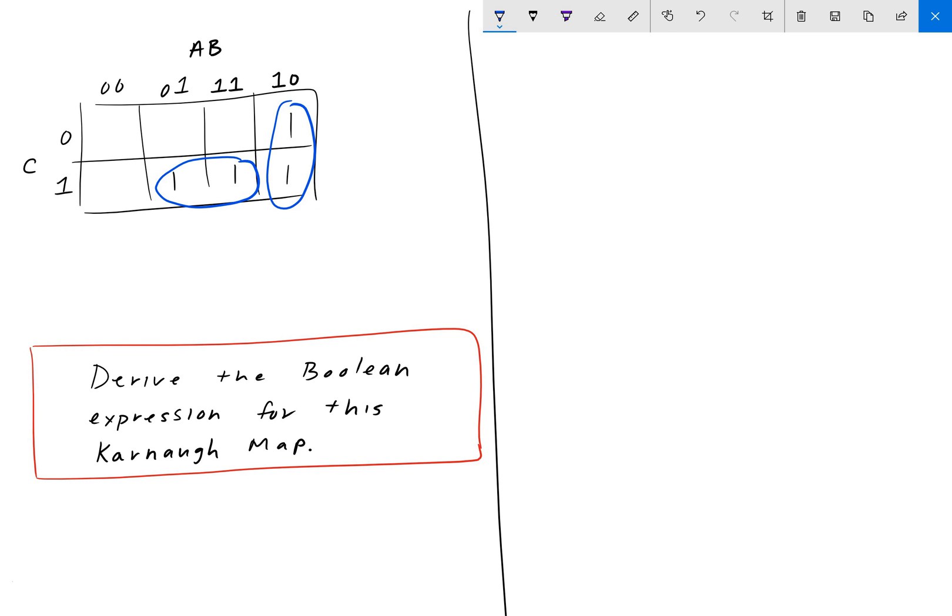It has to be a power of 2, and we want to find the largest power of 2. So let's call these groups here group 1 and group 2. And the bigger the Karnaugh map, obviously the more groups you'll have, and the more complicated the map can get.